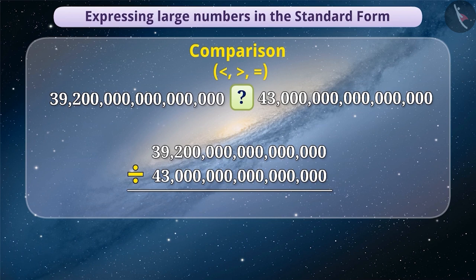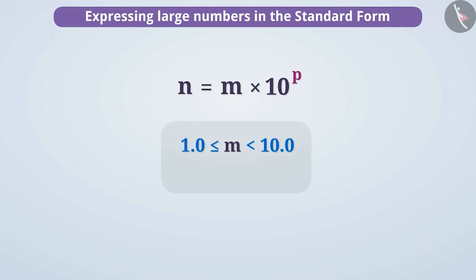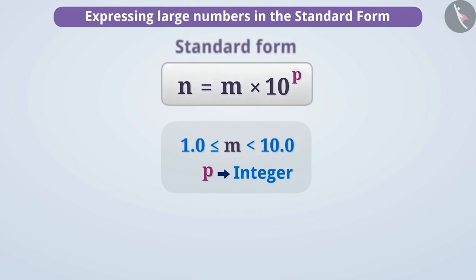This is possible with the use of the standard form of a number. We can express any number n using the exponential form m into 10 to the power of p, where the value of m can be equal to or greater than 1.0 and less than 10.0, and p is an integer. Such a form of a number is called its standard form.